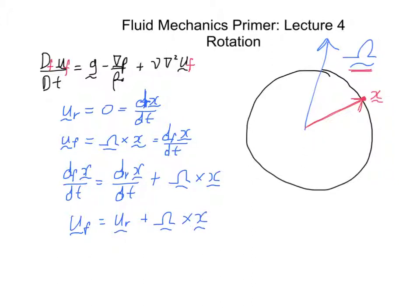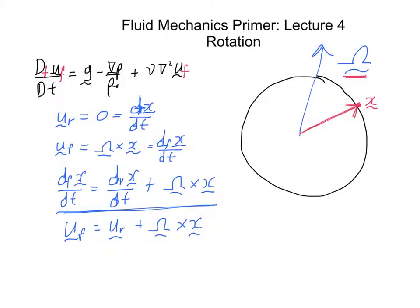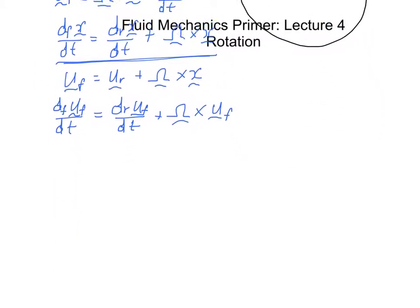The interesting thing about this equation is that it applies to any vector, not just to x. I can quite easily substitute uf into there, and the reason I want to do that is because I want to make a parallel with this equation here. So then I can write df uf/dt equals dr uf/dt plus omega cross uf. Seems easy enough so far.